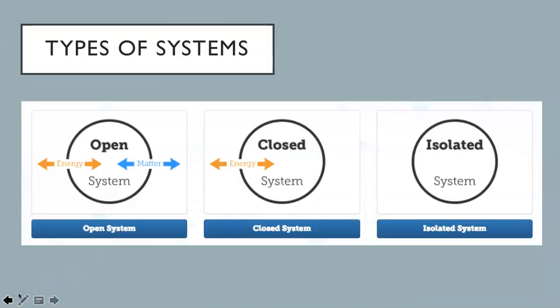There are three types of systems that we will be considering in this course. It is important that you really understand the difference between these three types of systems. An open system exchanges both matter and energy with its surroundings. A closed system exchanges energy but not matter with its environment. And an isolated system exchanges neither matter nor energy with its environment.